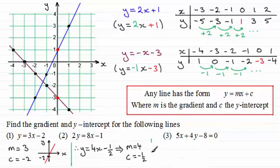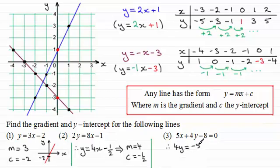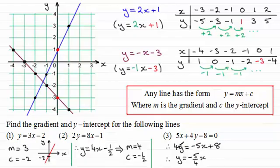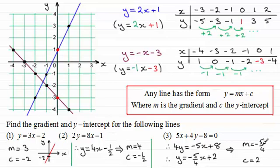For the last one, number 3, we've got to totally rearrange this to get y as the subject. What I'm going to do is subtract 5x and add 8 to both sides, so we get 4y equals minus 5x plus 8. But we've still got to divide both sides by 4, giving us y equals minus 5 over 4 — minus 5 quarters — times x, and then 8 divided by 4 is 2. So it follows that m, the gradient, is minus 5 quarters, and c is 2. What we'd have is a line sloping in the negative sense, crossing at 2.